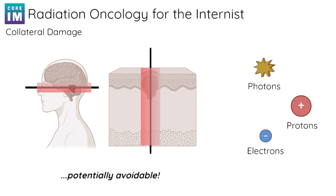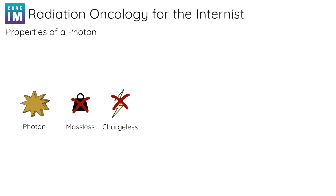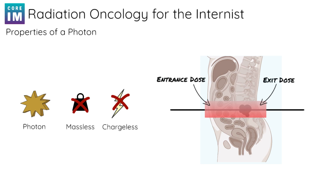So let's get into it. The problem with photons is that they travel straight through the body and damage everything in their path. Photons are massless and chargeless, so because they have no mass, they pass easily through cells and solid matter, and because they're not charged, they don't interact with other charged particles. This damage near the entrance point is called the entrance dose, and this damage near the exit is called the exit dose. In some situations, like certain brain tumors, this kind of collateral damage is unacceptable, and photons don't seem like the right choice.